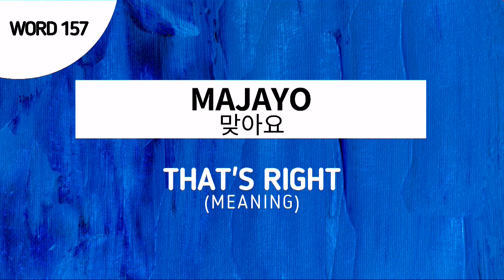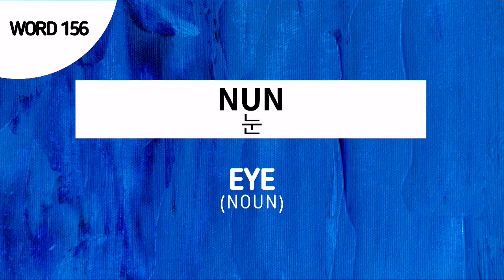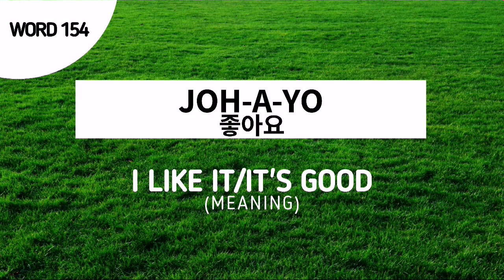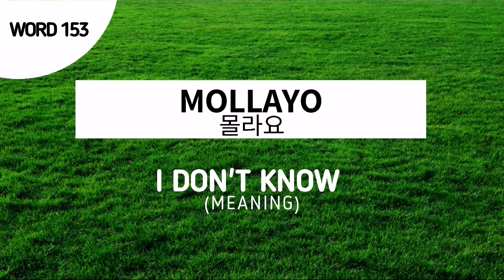Word number 157 is maja-yo, and this is used to say 'That's right.' Word number 156 is nun, and this is the Korean noun for ice. Word number 155 is anjo-wayo, used to say 'I don't like it' or 'it's not good.' Word number 154 is chowayo, used to say 'I like it' or 'it's good.' Word number 153 is molayo, used to say 'I don't know.'